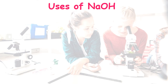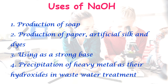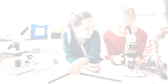Now let us discuss the uses of sodium hydroxide. Sodium hydroxide can be used for the production of soap, paper, artificial silk, and dyes. It is also used as a strong base in laboratories, and can be used to precipitate heavy metals as their hydroxides in wastewater treatment.